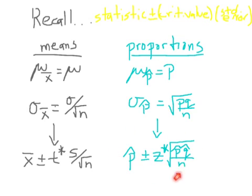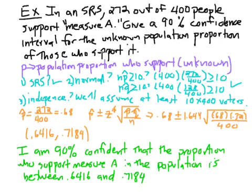Let's do an example now. This is a complete worked-out example that almost every problem in section 10.3 will follow. We took a simple random sample for an election with Measure A on the ballot. 272 out of 400 people said they support Measure A. Give a 90% confidence interval for the unknown population proportion of those who support Measure A.